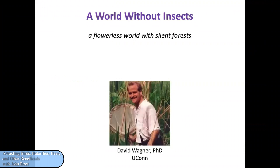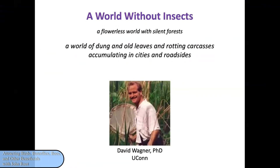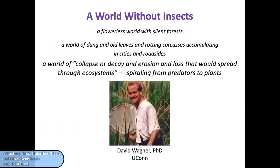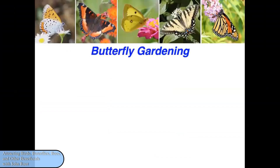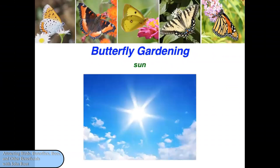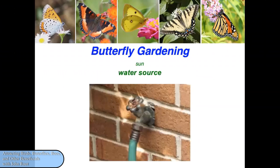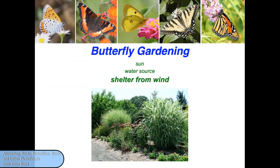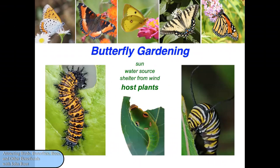David Wagner, scientist at the University of Connecticut, explains that a world without insects is not a world we want or can live in. It would be a flowerless world with silent forests — a world of dung and old leaves and rotting carcasses, because insects participate in decomposition of dead bodies. A world of collapse, decay, and erosion that would spread through ecosystems, spiraling from predators to plants — because insects as a whole are keystone species that the larger animals simply cannot live without. We can establish a habitat for butterflies with butterfly gardens, and if we do so we'll be attracting other pollinators as well. Think about sun — at least six hours is good — being near a water source, shelter from the wind, host plants, nectar-producing plants throughout the growing season, and please use organic landscaping practices.